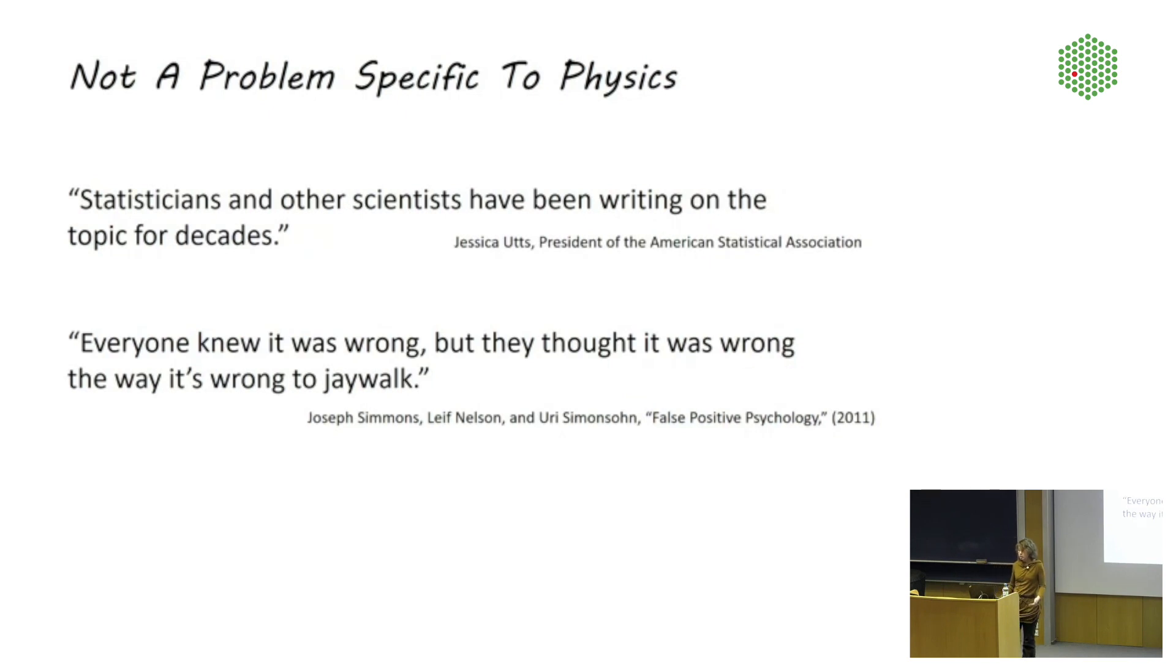Similar story also in sociology and psychology, where people have been using flawed measures for statistical significance for decades. This is something that everyone knew about, like even I knew about this. I had some arguments about this with psychologists decades ago or something. And they just did not want to hear that there was anything wrong with that because it was what everyone else was doing. So the president of the American Statistical Association wrote the following in 2016. Statisticians and other scientists have been writing on the topic for decades. So clearly everyone knew it. And then there are those psychologists who summed up their assessment of the situation as follows. Everyone knew it was wrong, but they thought it was wrong the way it's wrong to jaywalk. In other words, it's okay because everyone else does it too.